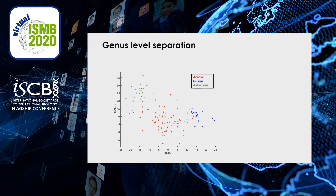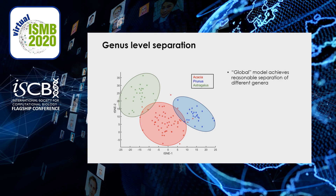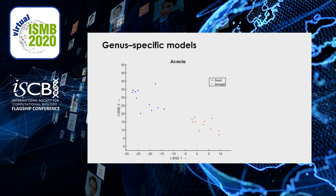The first level of results: putting all data from the three different genera through our TSNE model, we can see that this global model does achieve reasonable separation of the three different genera. We can then go one level deeper with models that are specific to individual genera.